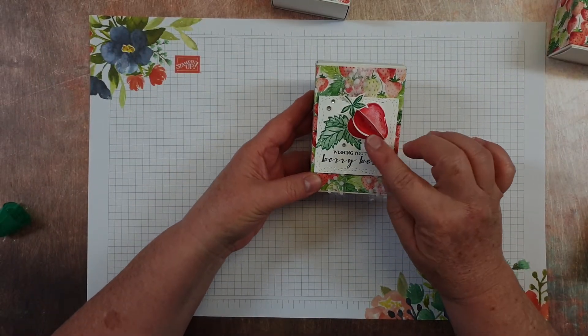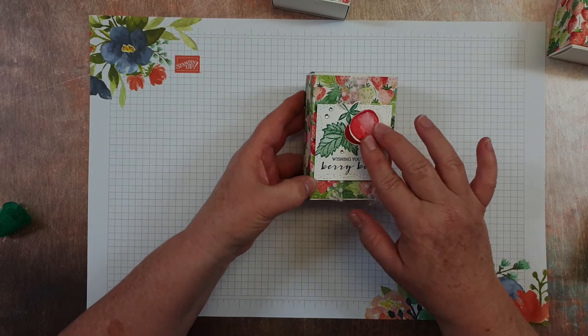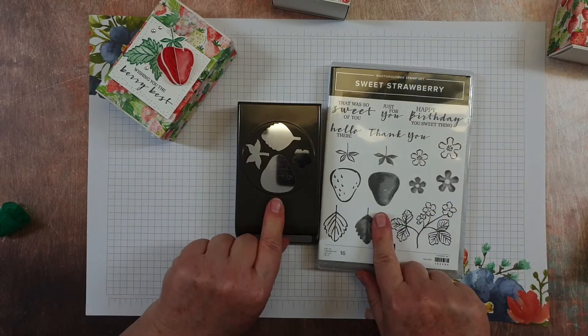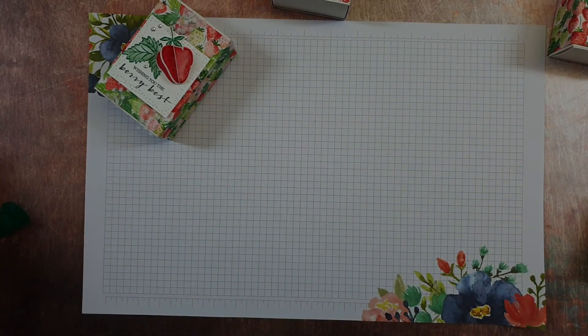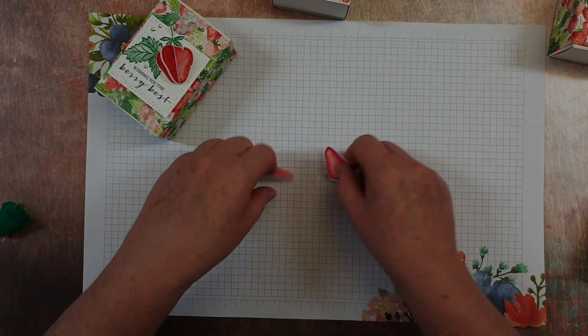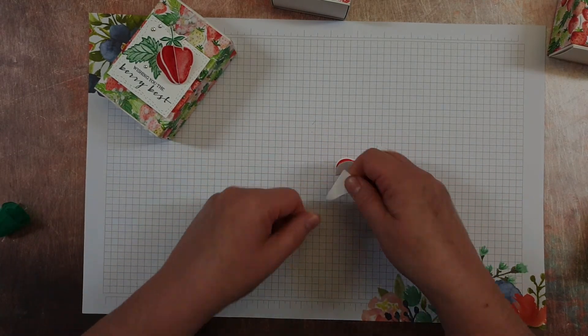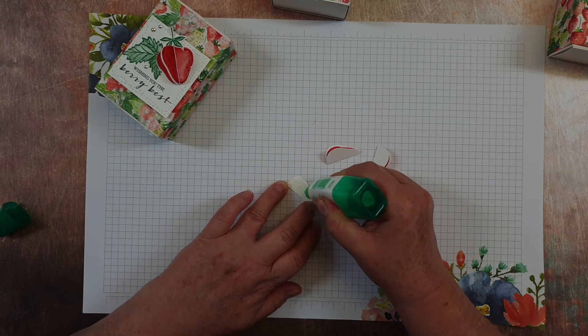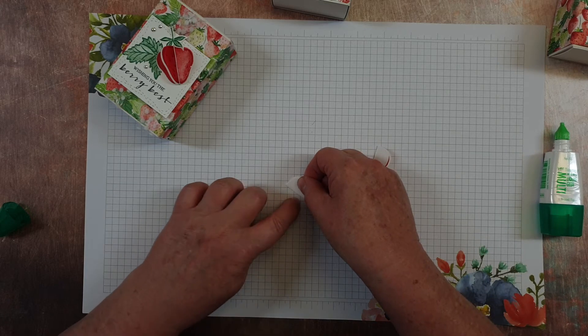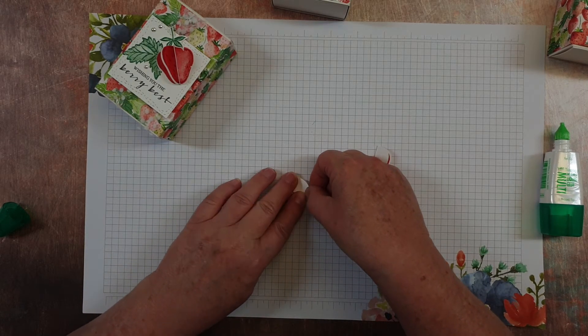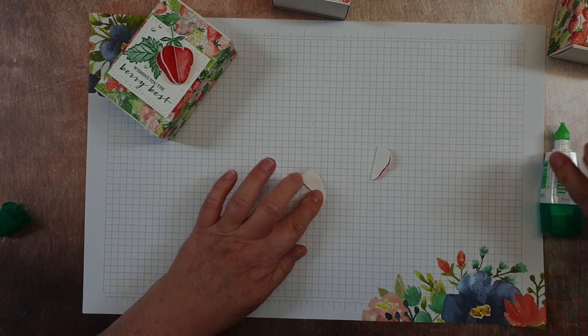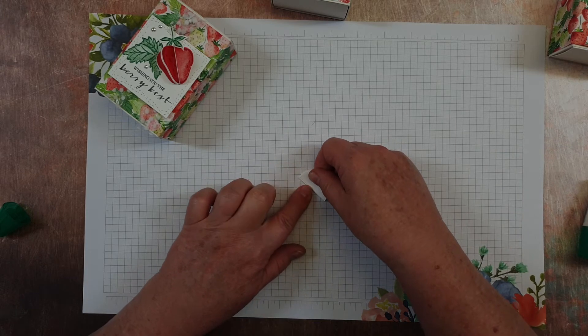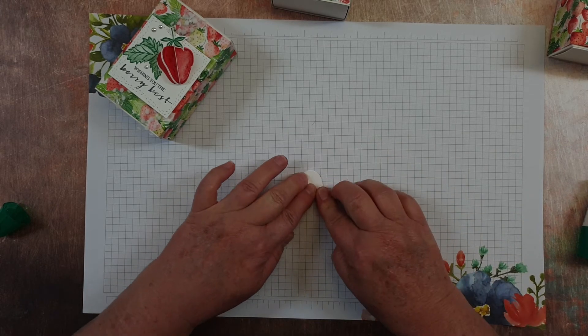And then to finish it off, I've stamped three strawberries and punched them out from the Sweet Strawberry bundle. And you then fold them in half like so and stick them together with a bit of the glue again. So you just lay three strawberries on top of each other, lining them all up.